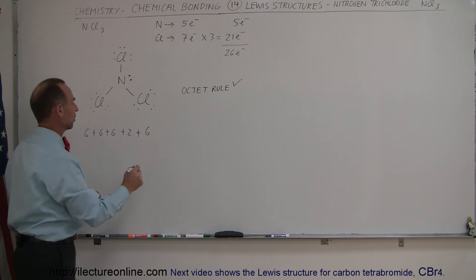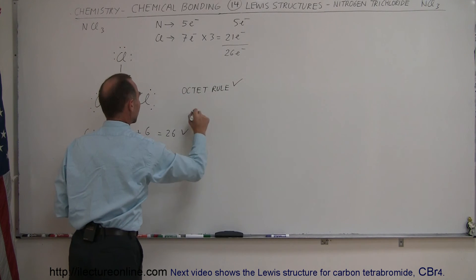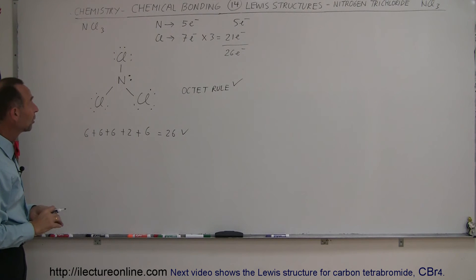that's 24 plus two is 26. And sure enough, 26 matches the 26 available electrons, so therefore that rule is followed as well. So it looks like we have our Lewis structure for nitrogen trichloride.